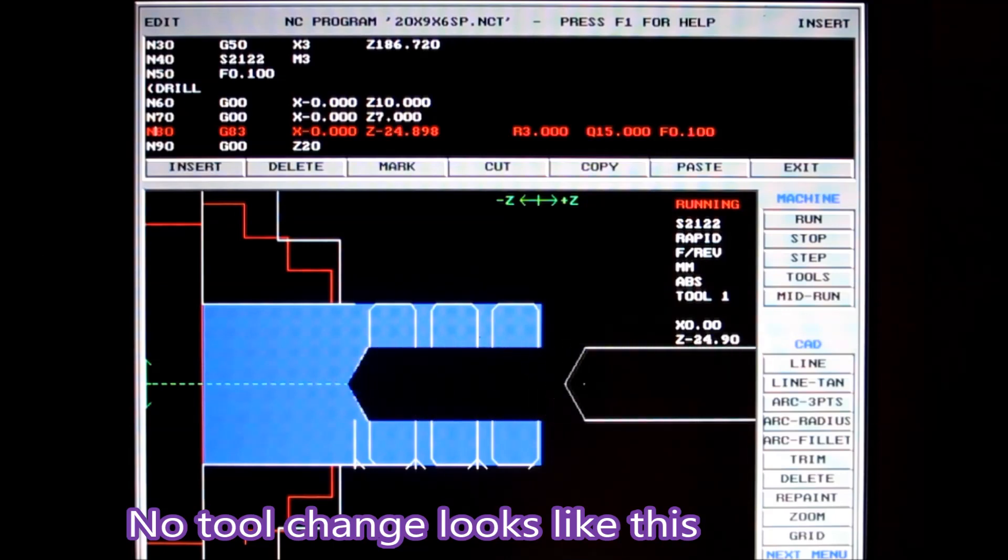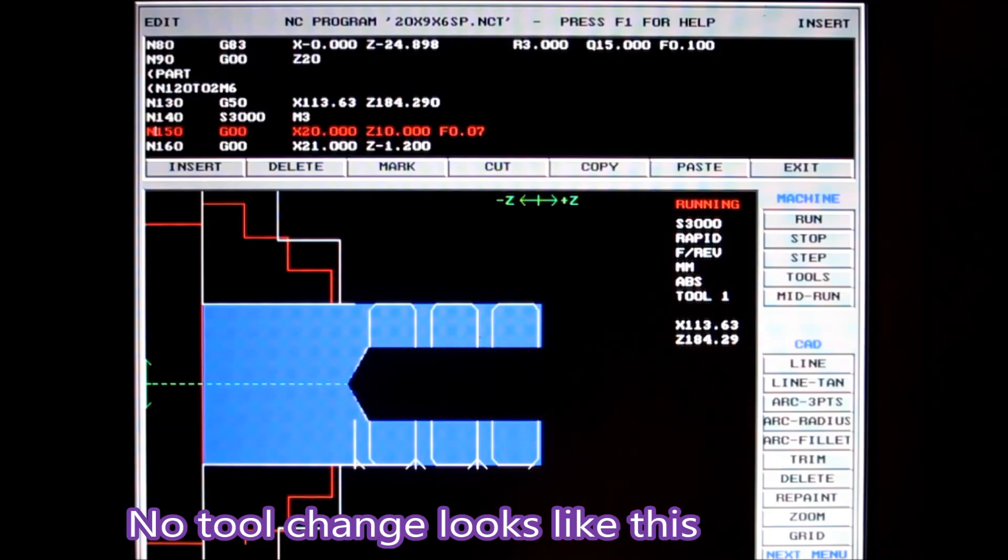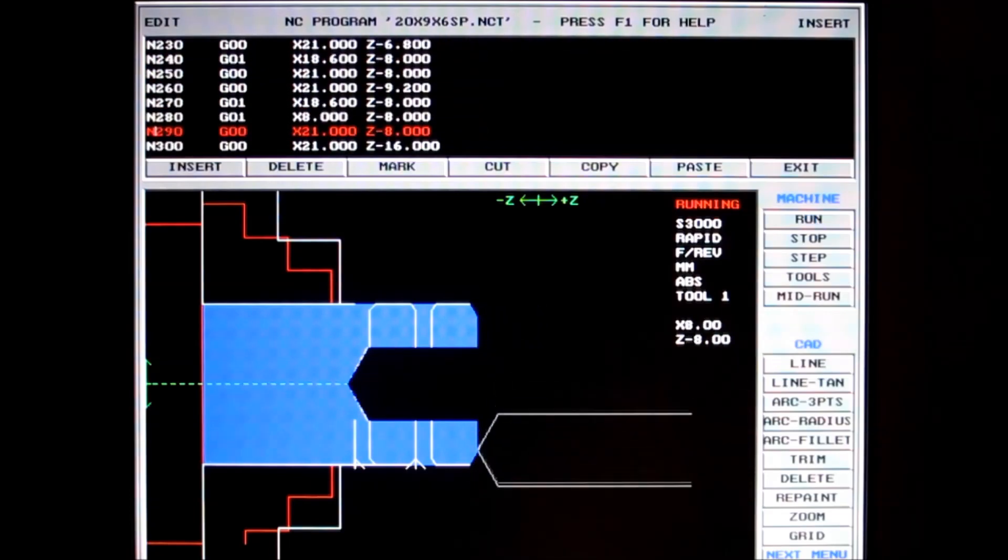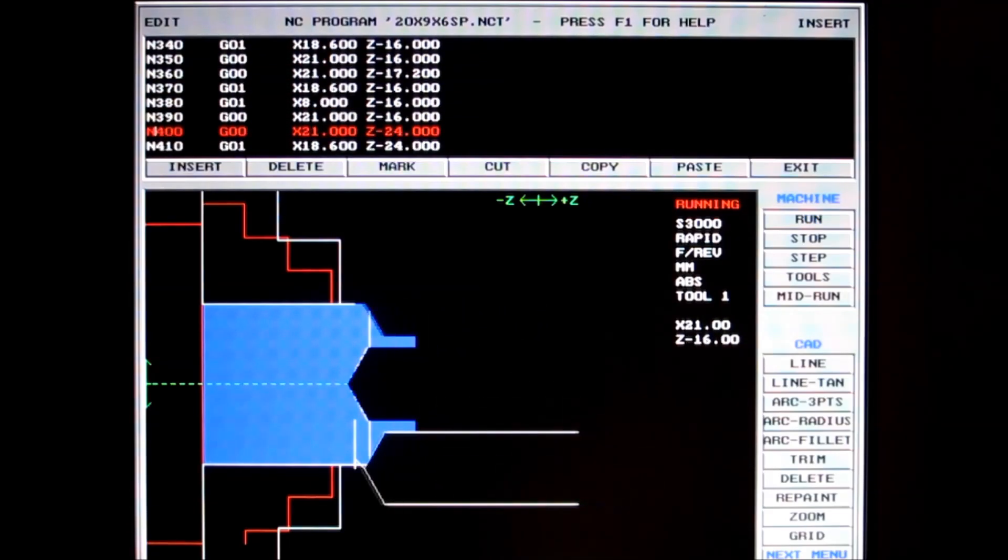There's no tool change in this actual code, and when you simulate this without a tool change, this is what happens - it brings the drill back again because it still thinks you're using the same tool that you were using before.